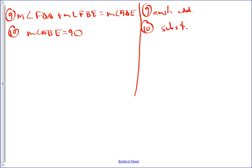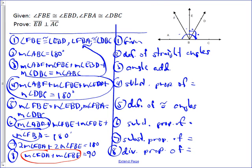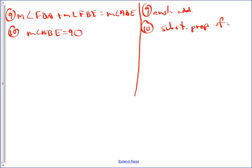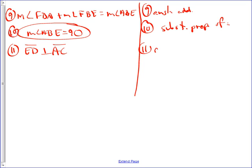And then, your last step is to make your claim, which is what you were trying to prove. And what we were trying to prove here is that EB is perpendicular to AC, and the reason for that is definition of perpendicular lines, and that is they make a 90-degree angle. So, once we show one of these angles is 90 degrees, then we know that they make a 90-degree angle, and so, it's just definition of perpendicular lines. And you are done.